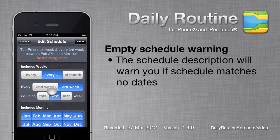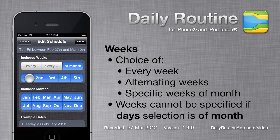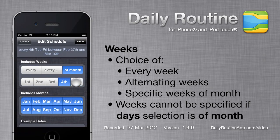It is possible to create a schedule which matches no dates. In this case, Daily Routine will warn us. In addition to simple repetition, we can choose weeks relative to the start of the month. For example, here I can select the fourth week of the month.